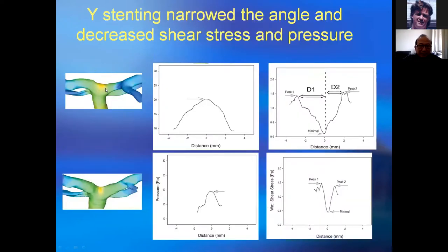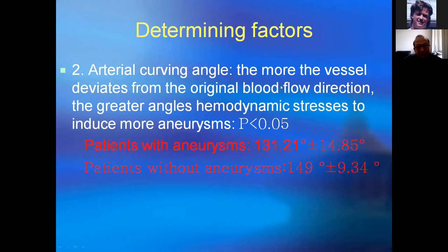Before wire stenting, the total pressure and shear stress are very high and wide. After wire stenting, the bifurcation angle becomes very small, total pressure and shear stress greatly decrease and become narrow, focusing on the bifurcation apex where a strong collagenous band provides protection. Curving angle also plays a role — the more the vessel deviates from the original blood flow direction, the greater the hemodynamic stress. Patients with aneurysm have smaller curving angles; patients without aneurysm have greater curving angles.